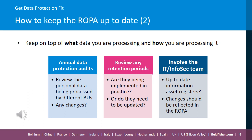Your ROPA should include information on the location of personal data processed by your organisation and on any technical and organisational security measures in place. Data protection audits should involve the IT or InfoSec teams to make sure your organisation has up-to-date information asset registers. Information asset registers record assets, systems and applications used for processing and storing personal data across the organisation. Changes to these registers that show changes to how personal data is processed or stored should be reflected in the ROPA.